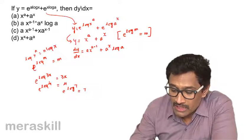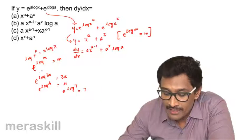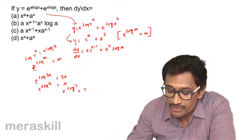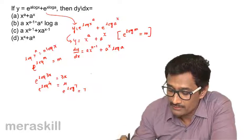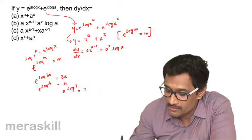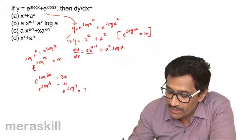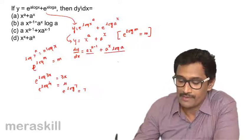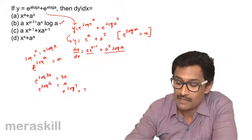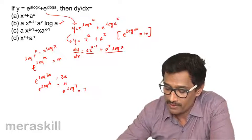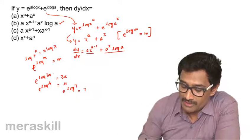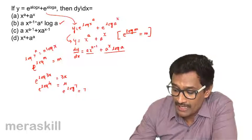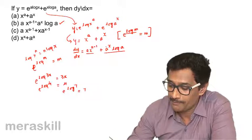Among the options, ax^(a-1) + a^x log a matches. Remember the key formula: e^(log m) = m.